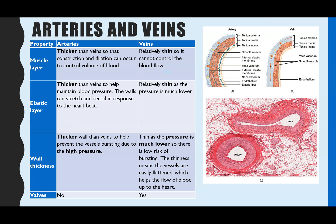Starting with arteries and veins: here we have a micrograph showing a cross section through an artery compared to a vein, and straight away you can see some clear differences. The vein's lumen is an irregular shape and it's much bigger. The artery's lumen — lumen meaning the space in the middle that blood flows through — is much much smaller, due to differences in the thickness of the wall.